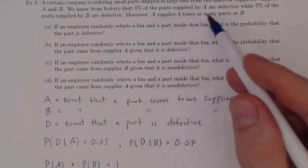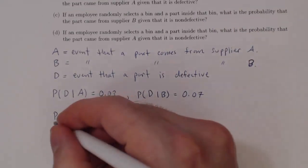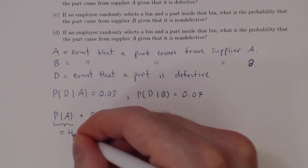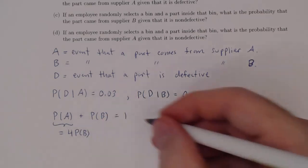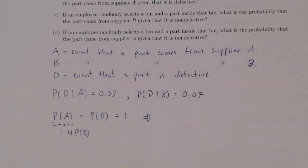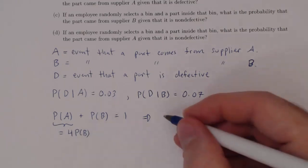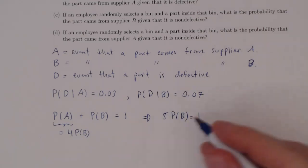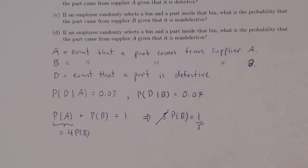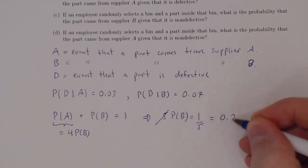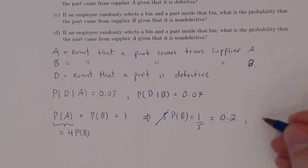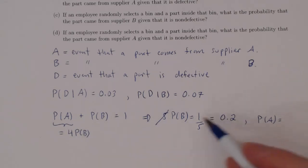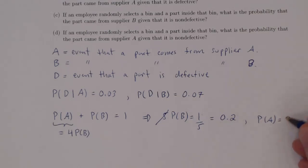A supplies four times as many parts as B, so P(A) is four times bigger than P(B). So on the left-hand side we have 4·P(B) + P(B), which is 5·P(B) = 1. Dividing by 5, P(B) = 1/5 = 0.2. And P(A) = 4·P(B) = 4/5 = 0.8.